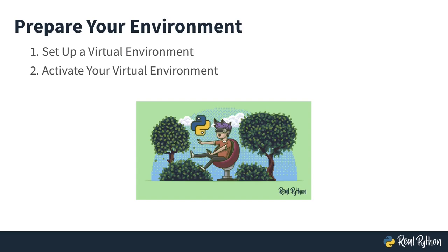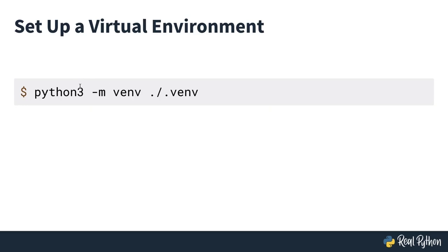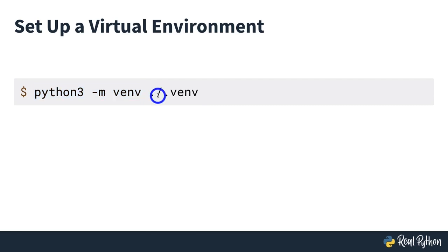The command for setting up a virtual environment on a Unix system is `python3 -m venv`, and then the path to the folder you want to create. This will be a little different if you're on a Windows machine — make sure to check the description. The path on the right side after `python3 -m venv` is the path and name of the virtual environment you want to create. In this case, I'm creating a new folder called `.venv` in the current folder that's going to be the virtual environment.